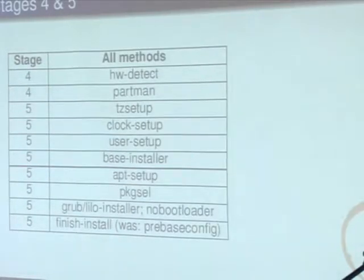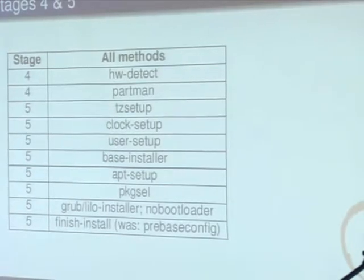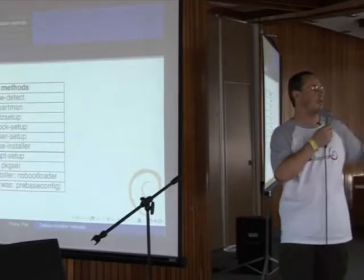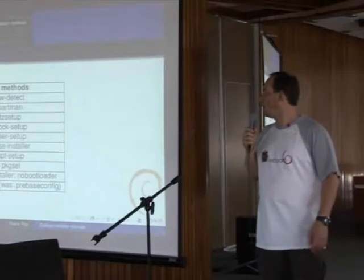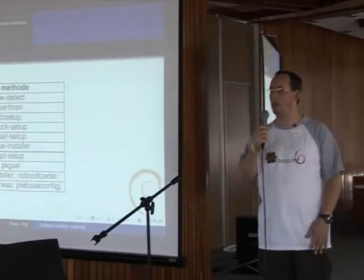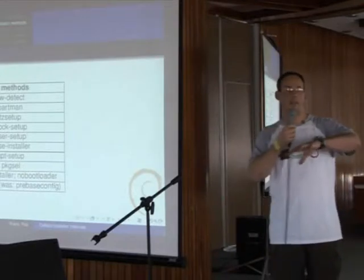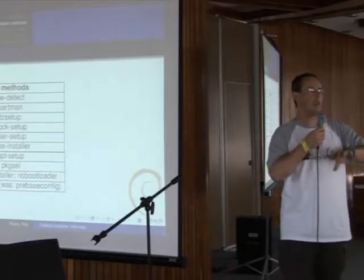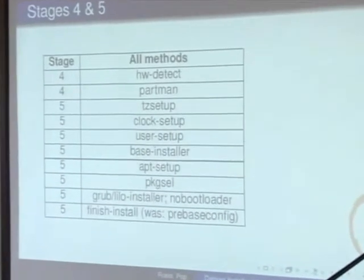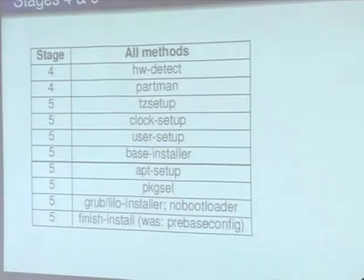Stages four and five are basically similar for all installation methods. First, some more hardware detection, mainly to find drivers for your hard disks, then partitioning, and a number of configurations that used to be in base config, but this has all been moved to the first stage of the install before the reboot now. Then we run base installer, which calls the bootstrap and sets up your base system. Base installer will allow you to select the kernel, or will select one automatically for you, depending on the priority you're installing.